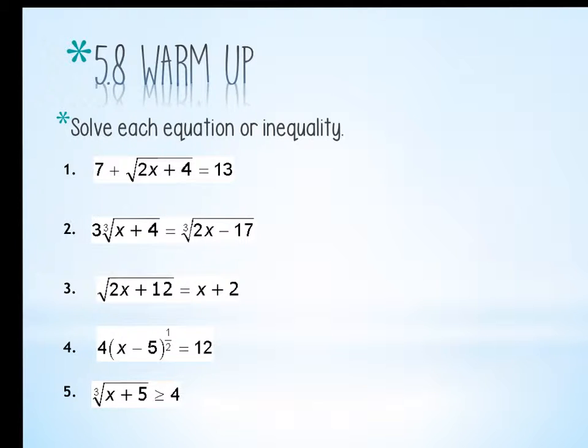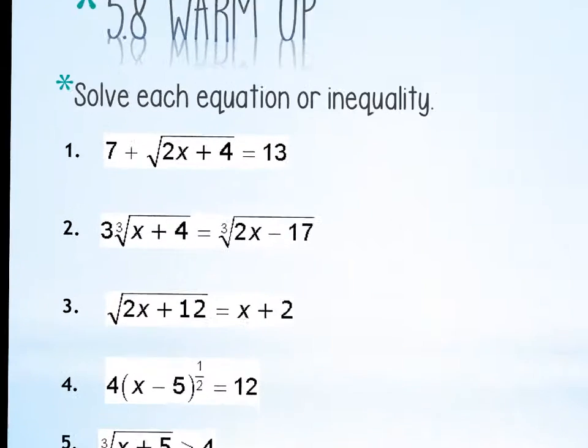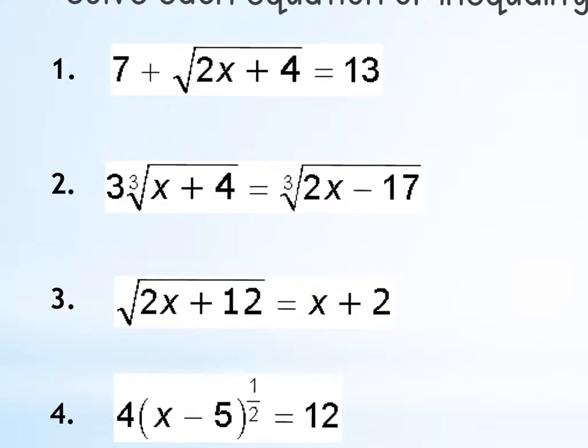So what's the first goal when I want to solve these? Square both sides. Good. First, I've got to get the square root by itself, right? And then if it's a square root, I'll square both sides. So for number one, your first step would be to do what? Subtract the 7.